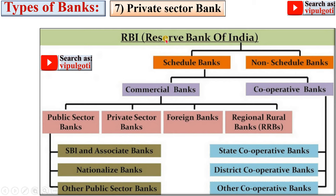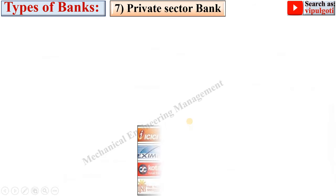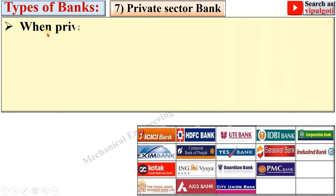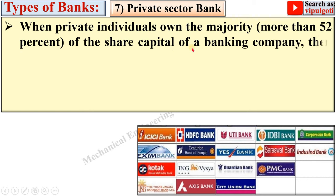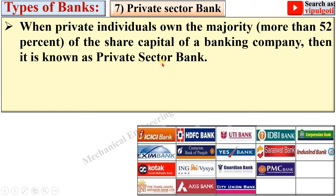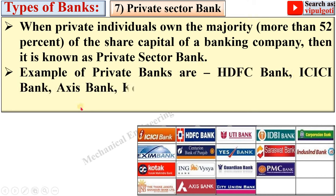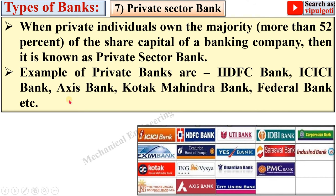Now Private Sector Banks — keep in mind that all these banks have the main objective of making profit. When private individuals own the majority, more than 52% of the share capital of a banking company, it is known as a Private Sector Bank. In Public Sector Banks the majority holding is by the government, whereas in Private Sector Banks the majority holding is by individuals. Examples of Private Sector Banks are HDFC Bank, ICICI Bank, Axis Bank, Kotak Mahindra Bank, Federal Bank, etc.